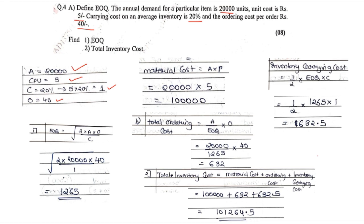This is how you'll have to solve the problem sum when they ask you to find the EOQ and the total inventory cost. This is the basic kind of sum which can be asked. There is also an advanced category sum which we will solve next.